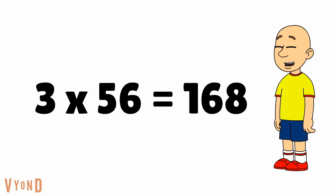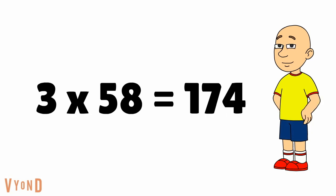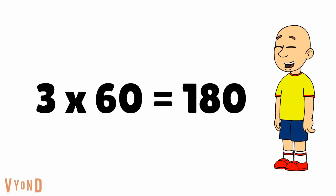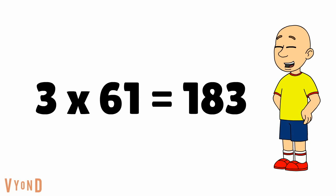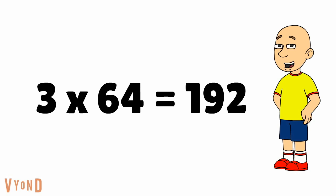3 times 56 equals 168. 3 times 57 equals 171. 3 times 58 equals 174. 3 times 59 equals 177. 3 times 60 equals 180. 3 times 61 equals 183. 3 times 62 equals 186. 3 times 63 equals 189. 3 times 64 equals 192.